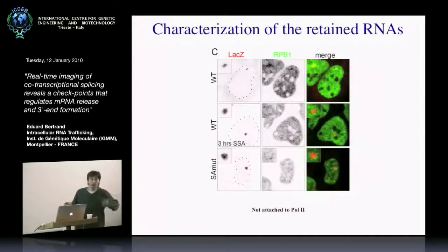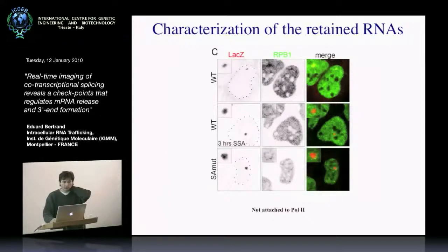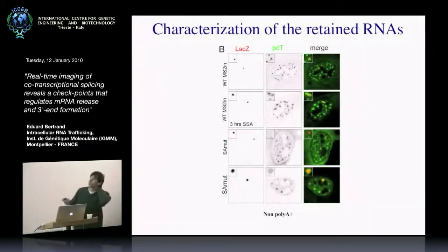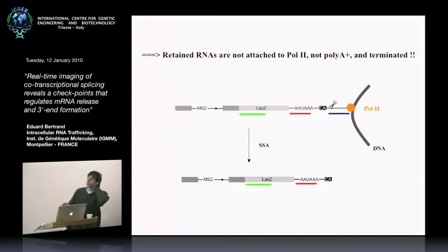We looked at Pol II to see whether we would also see an accumulation. In fact we don't see an accumulation of Pol II; in contrast, at the very large transcription sites after spliceostatin treatment, Pol II is excluded from the large RNA signal, confirming the RNA has been detached from the polymerase. We also looked at the polyadenylation status of the RNA. Using an oligo-dT probe to look at polyadenylated RNA, very much like for Pol II, we see exclusion of polyadenylated RNA at the transcription site. Altogether, this suggests the retained RNA is fully transcribed and cleaved, but lacks a poly-A tail.